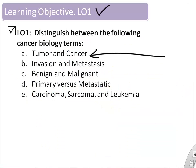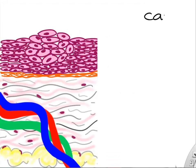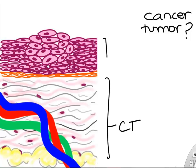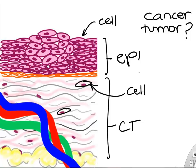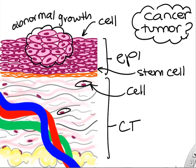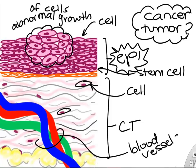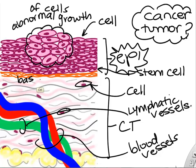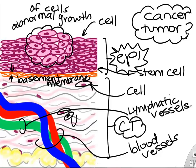So some terms you've heard before: tumor and cancer. What's the difference between a tumor and a cancer? In this diagram, we have some epithelial tissue with some connective tissue. Remember, you have cells in connective tissue and lots of collagen. In epithelial tissue, you have lots of cells and stem cells. A tumor and cancer are an abnormal growth of cells. We're going to focus on epithelial examples, but they could also be in connective tissue. There are blood vessels, lymphatic vessels, and the basement membrane — structures that will be important when we talk about cancers.